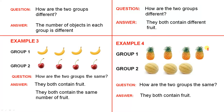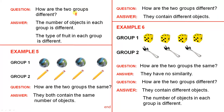Next example: Group 1 has 4 pineapples and Group 2 has 3 rockmelons. How are the two groups the same? They both contain fruit — that's about all you can say. How are the two groups different? The number of objects in each group is different, and the type of fruit in each group is different.